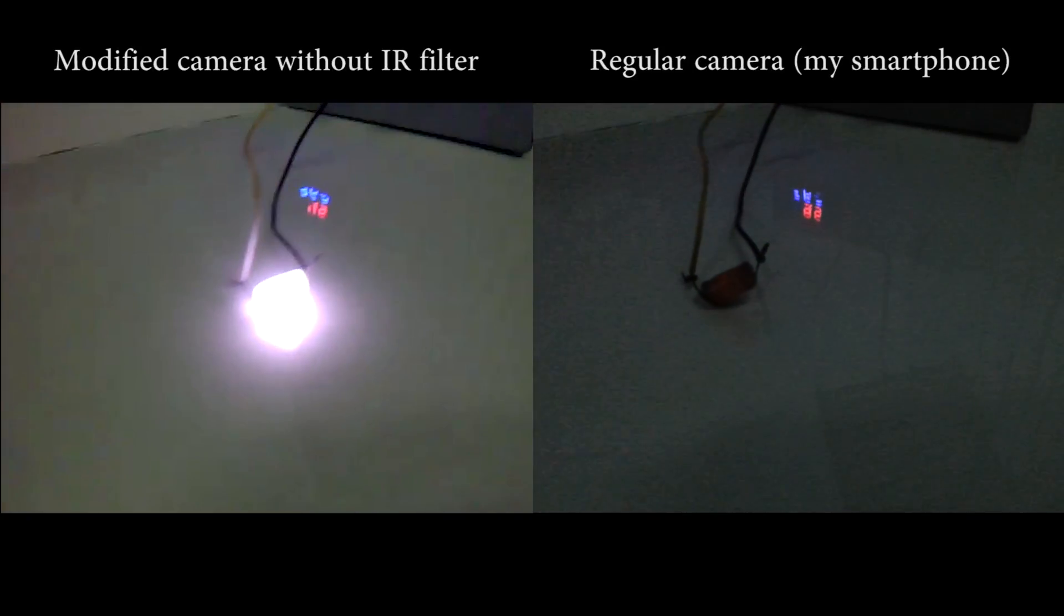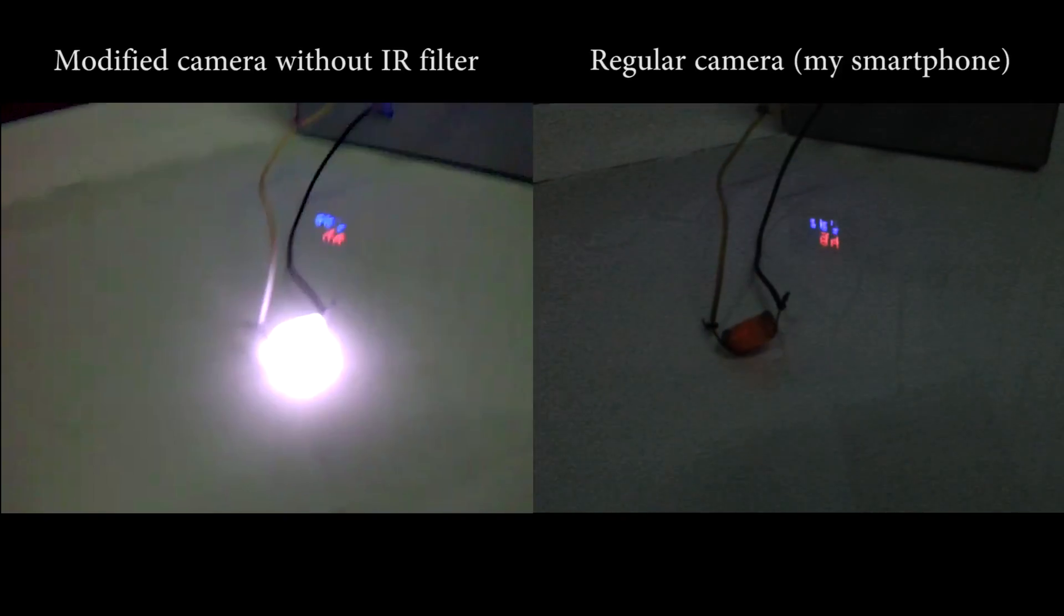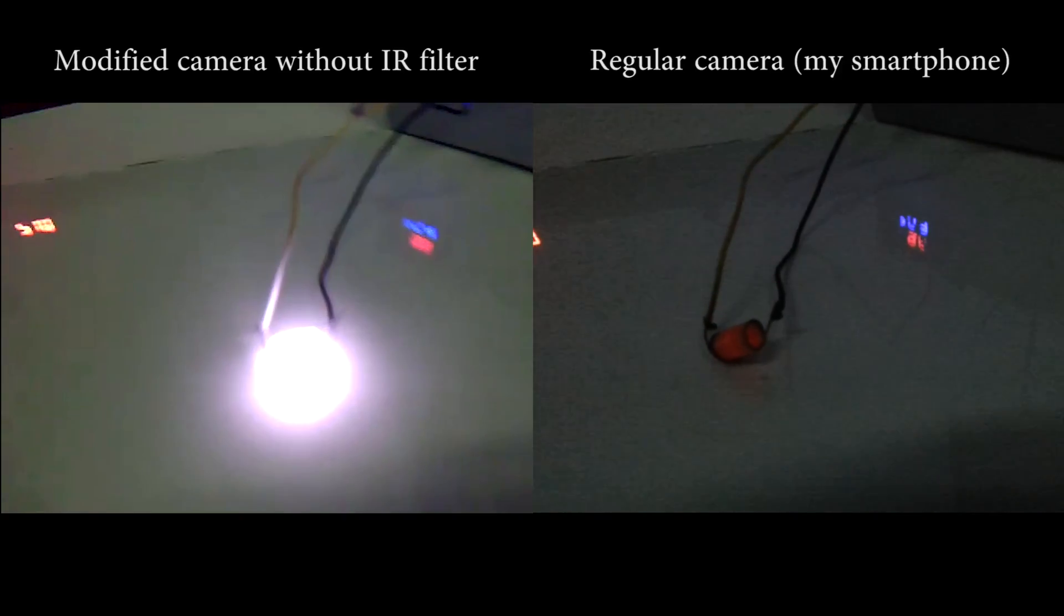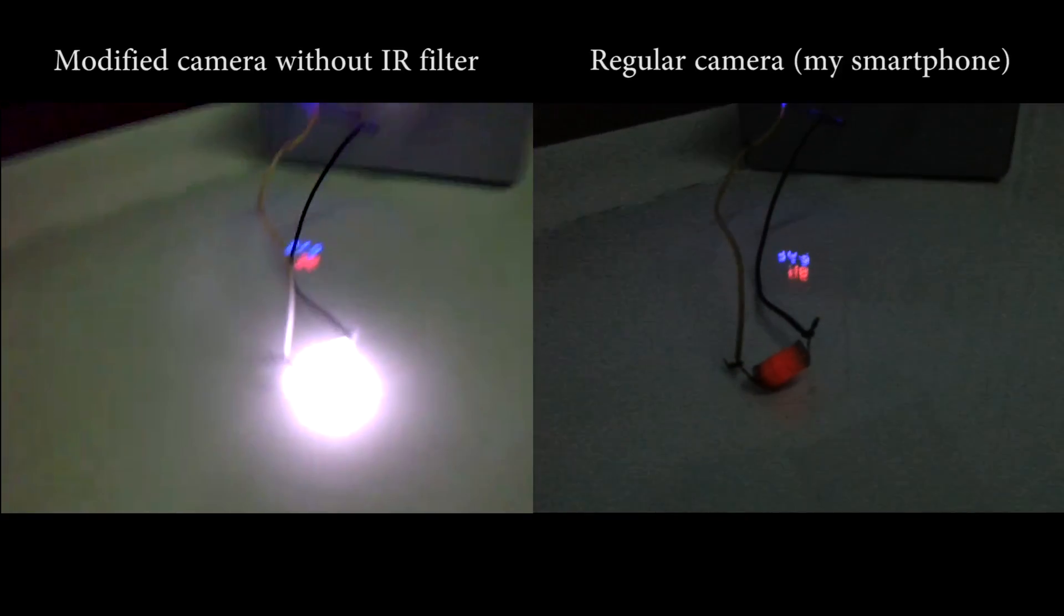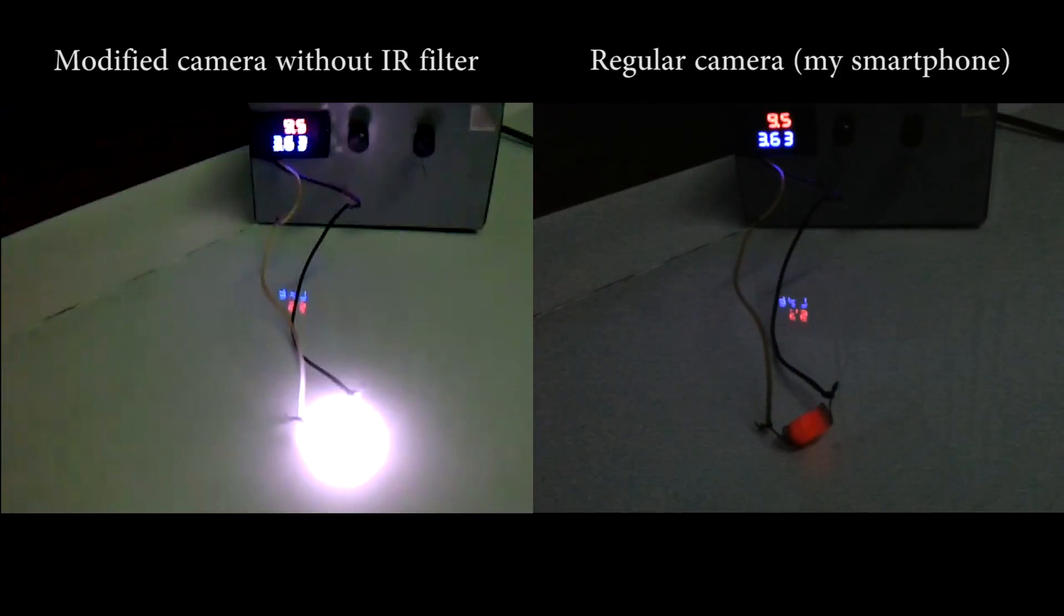And here is a nichrome coil connected to the power supply. You can see it produces a lot of infrared light. But usually people don't call it infrared, people usually just call it heat.